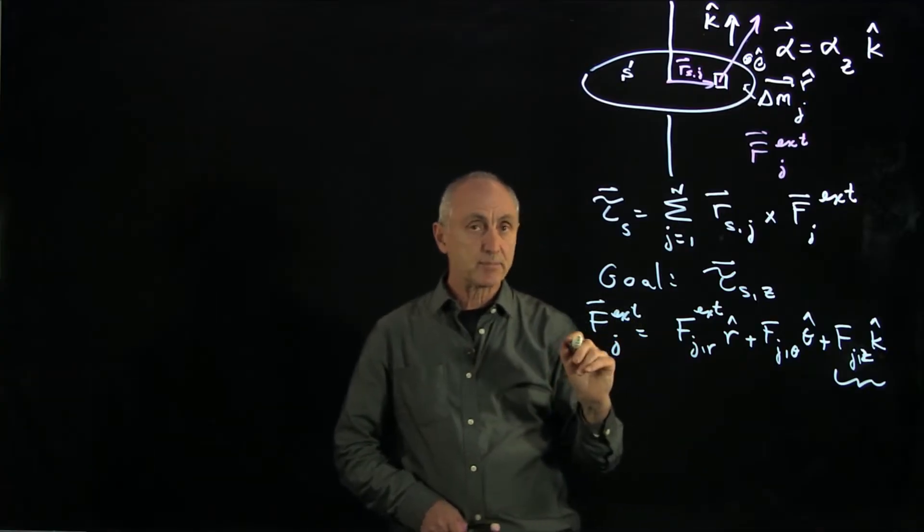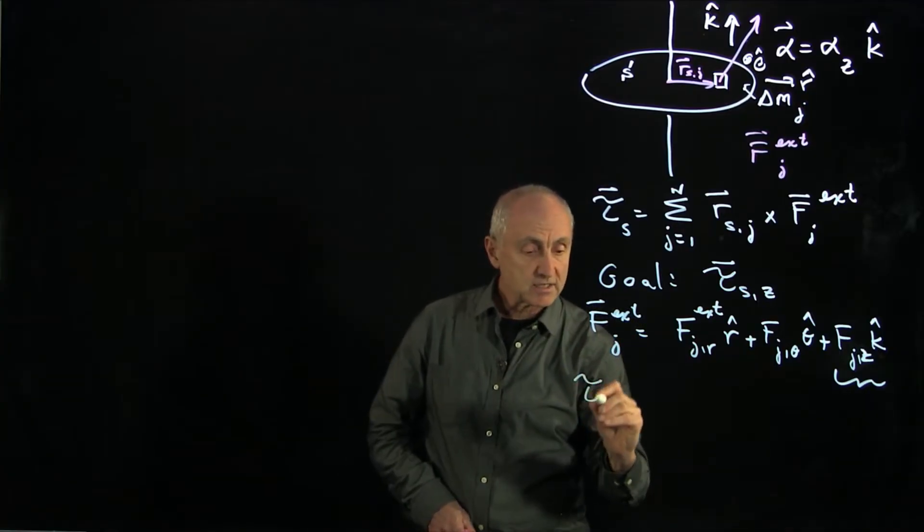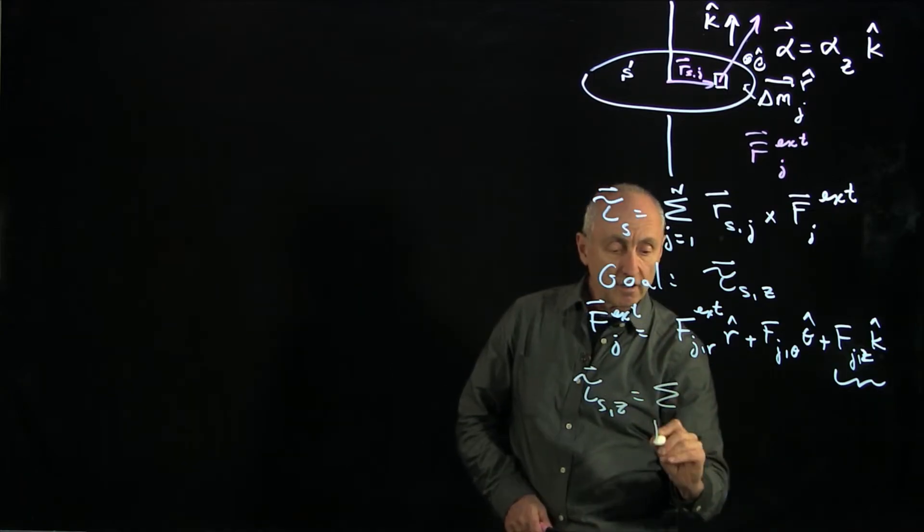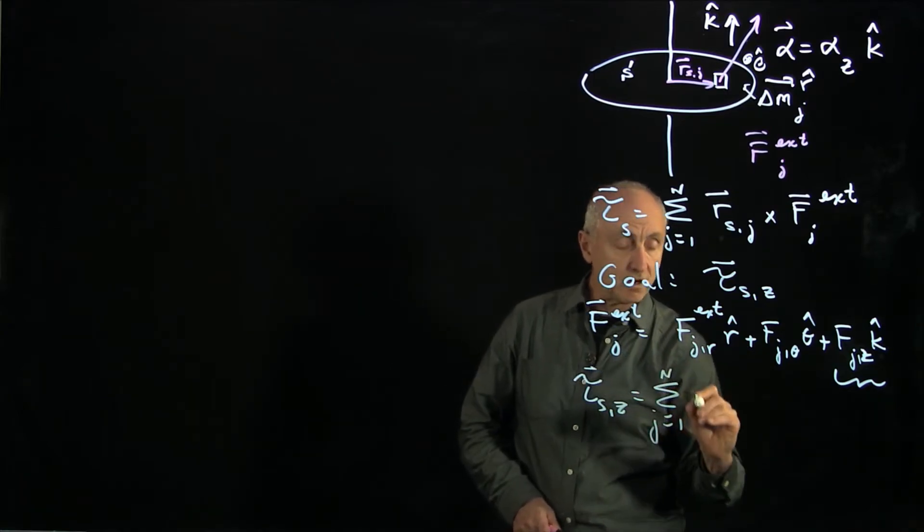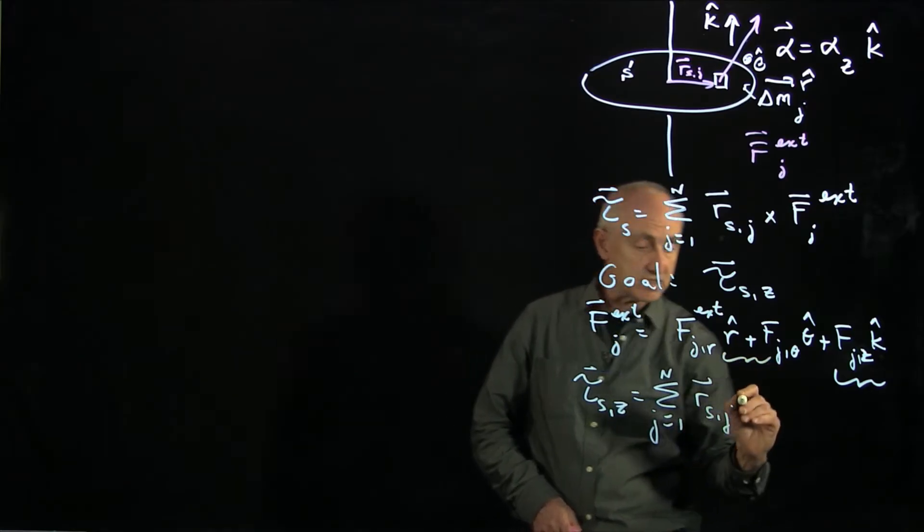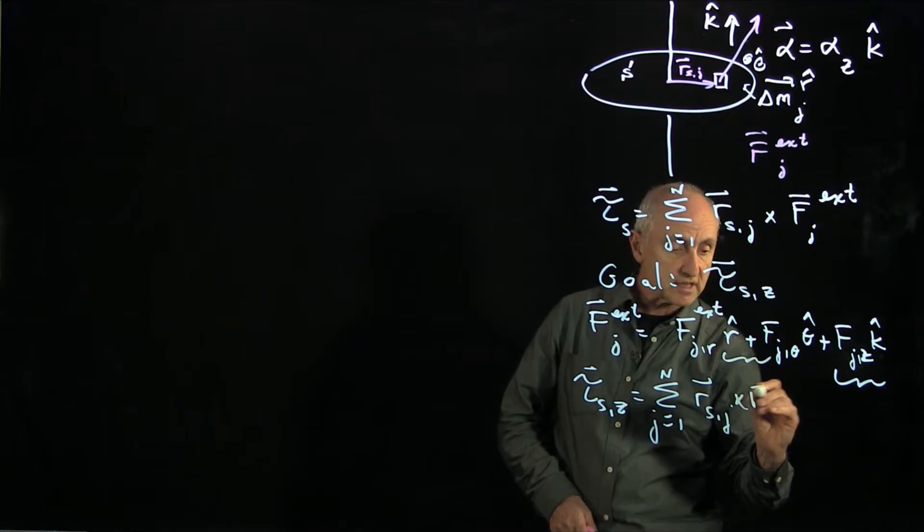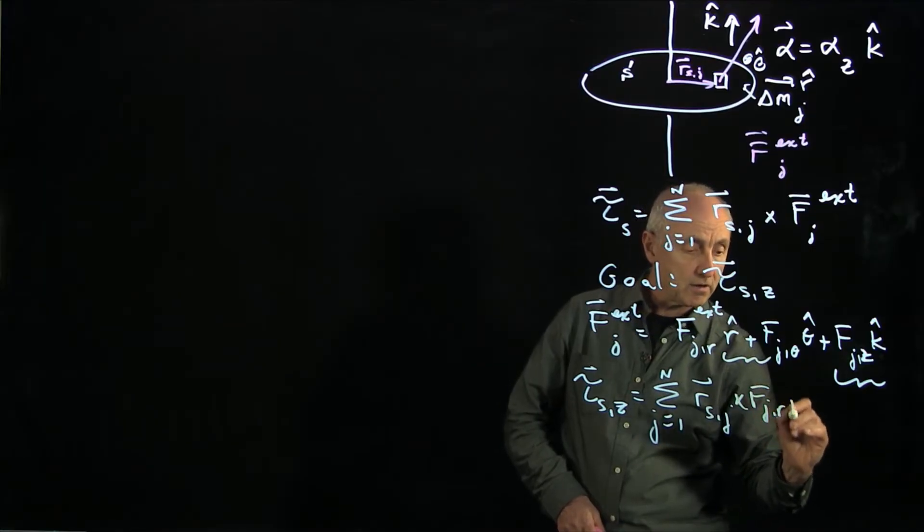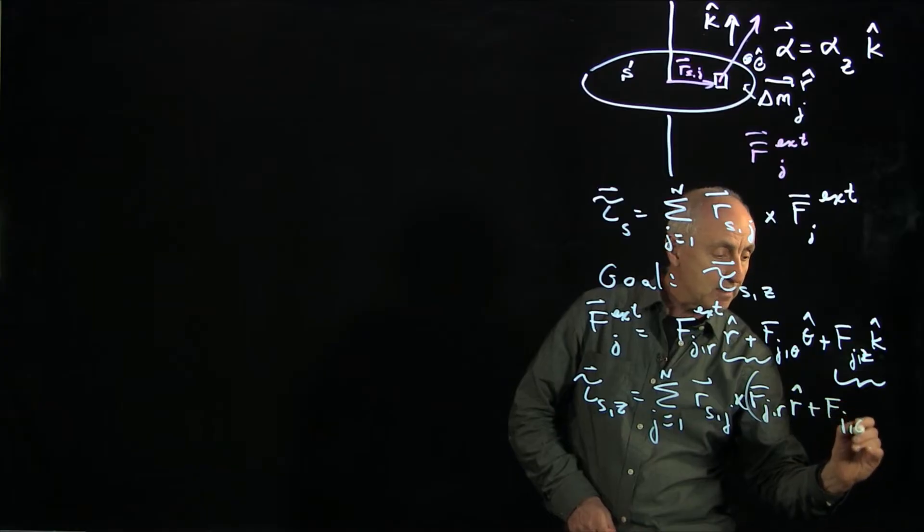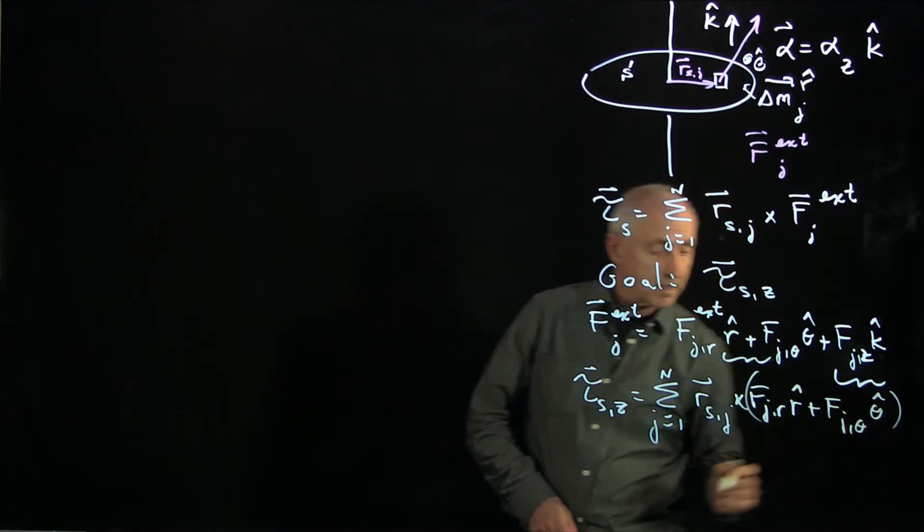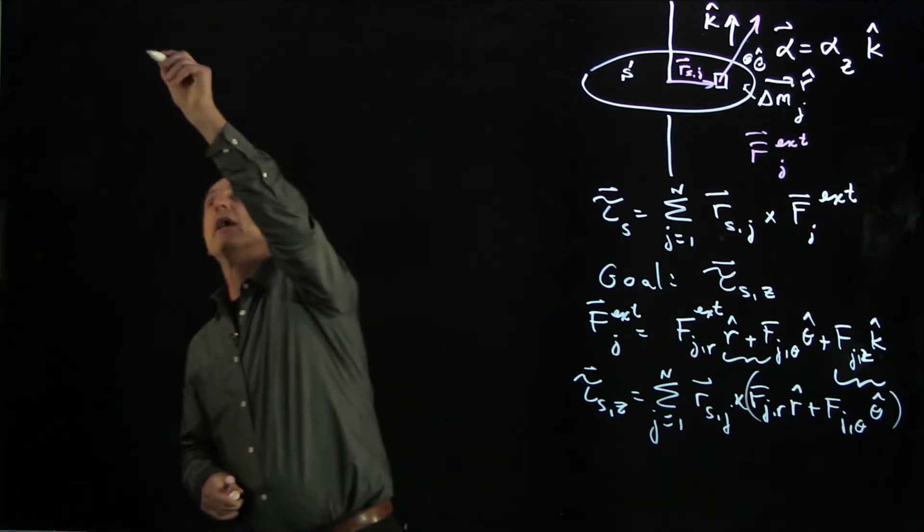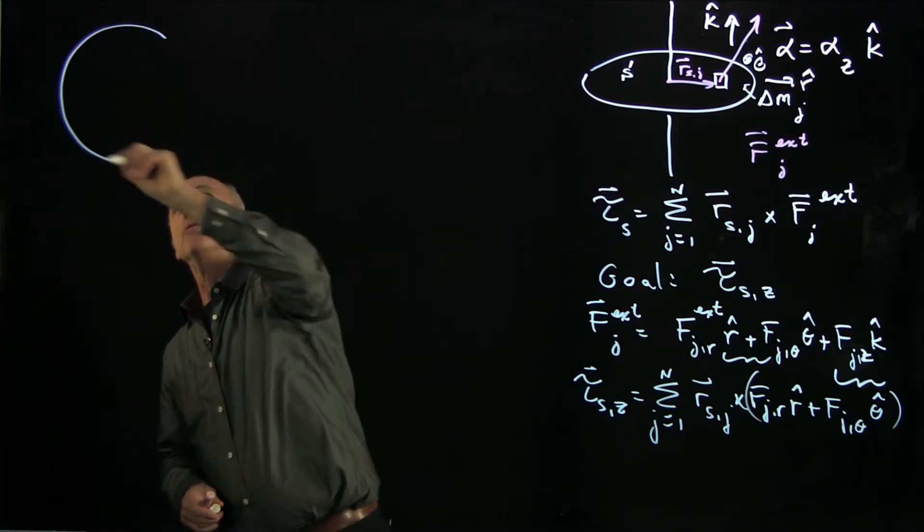So my first simplification is to say that the z component will only come from the cross product of r_sj with these two pieces. So that's cross f_j r r hat plus f_j theta theta hat. Now, again, we can make another simplification. And perhaps here, it's helpful to have another overhead view.